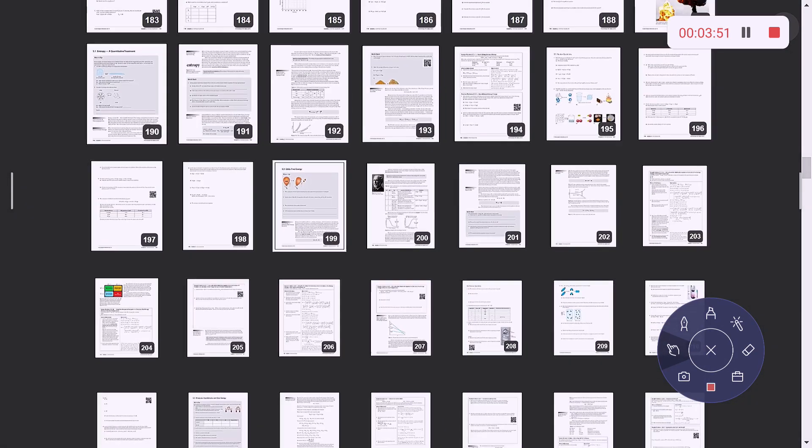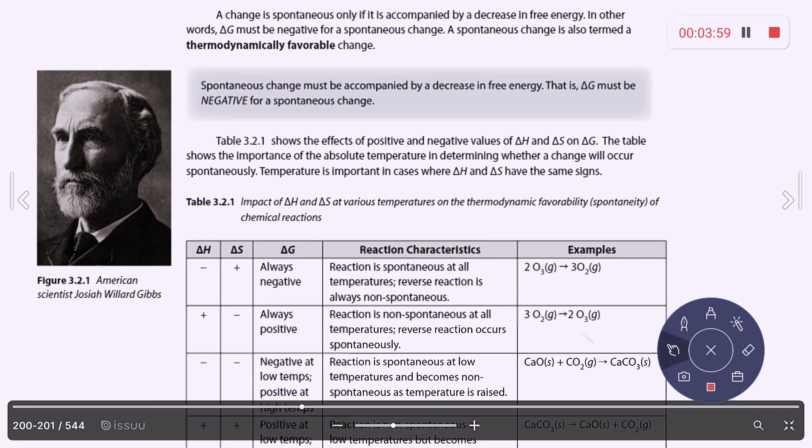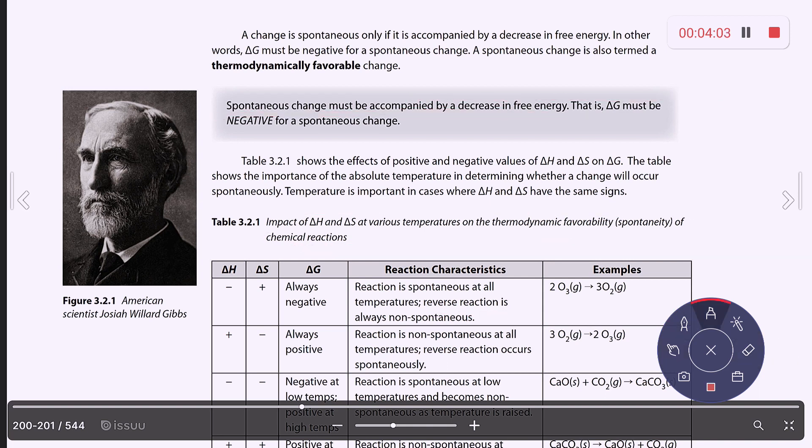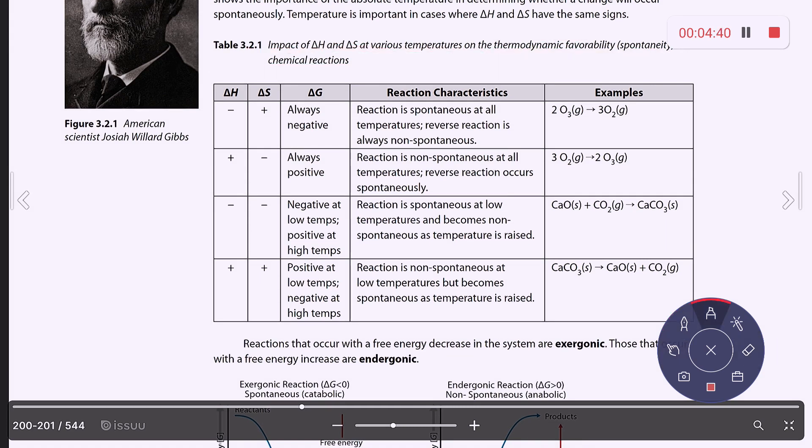A change is spontaneous if it's accompanied by a decrease in free energy. So that means your delta G has to be negative for a spontaneous change. And spontaneous changes are also referred to as being thermodynamically favorable changes. And we have a table that shows the effects of the positive and negative values for delta H and delta S on delta G. And temperature can be really important in some of these instances. And what I would recommend you do is I would definitely know this table.